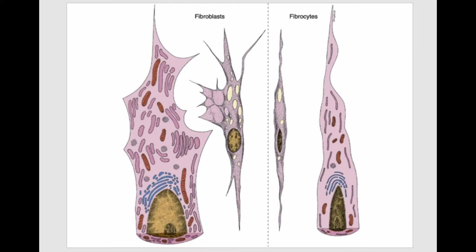Fibroblasts are young cells with a large nucleus that can divide by mitosis, producing numerous new generations of fibroblasts. Fibrocytes, by contrast, lose their ability for mitotic division. Unlike fibroblasts, fibrocytes contain a small, dark nucleus — meaning they are old, mature cells. The cytoplasm of fibrocytes is less intensely colored, and contains less rough and smooth endoplasmic reticulum, because they have lost the ability to produce proteins for fibers and components for the ground substance.